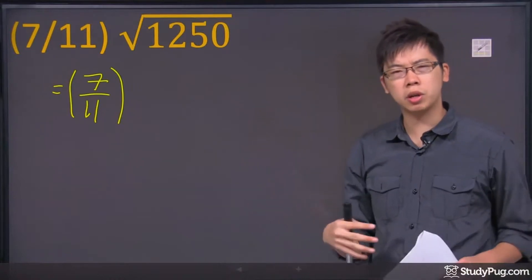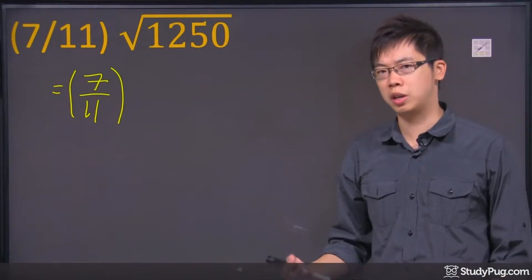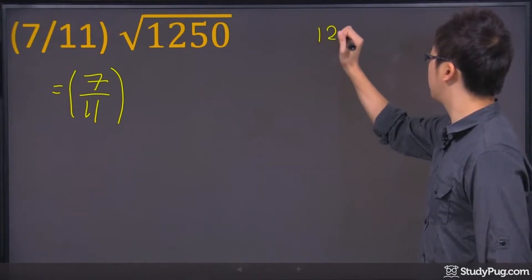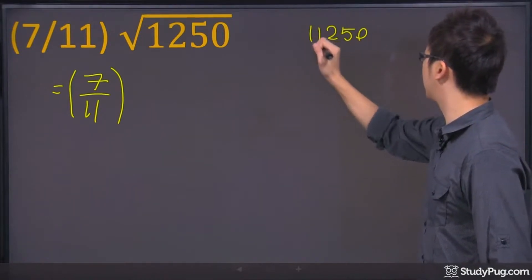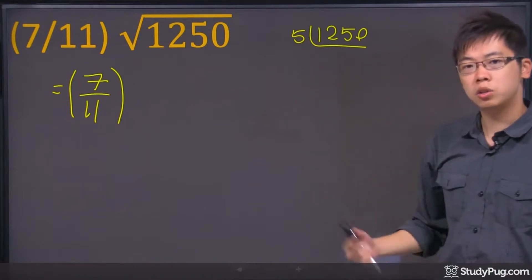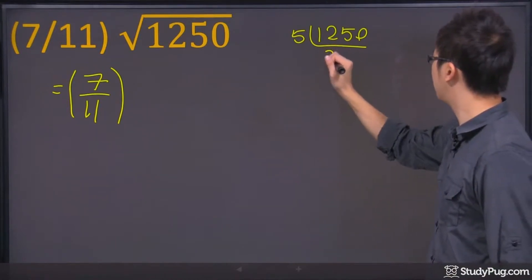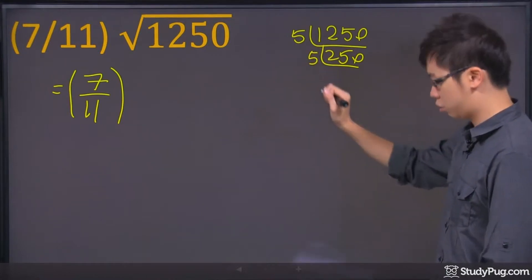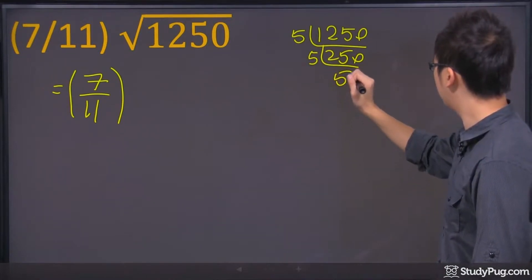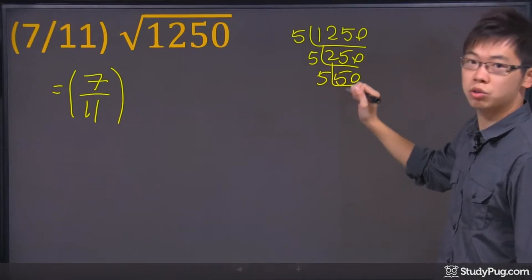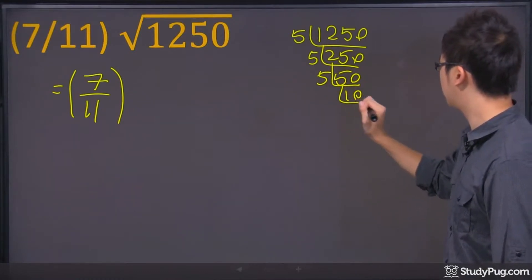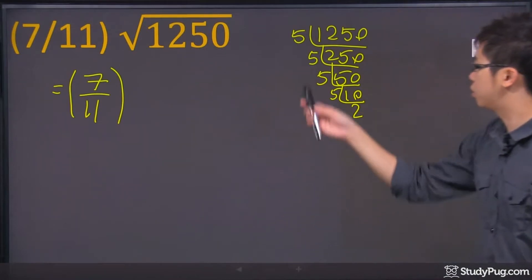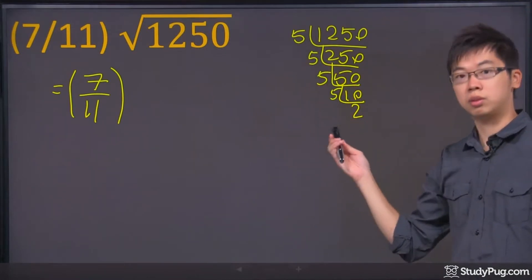For the 1250, because the number gets too big, what I would suggest is to figure out the prime factorization. So let's do 1250 on the side. If you divide the number by 5, you get 250. Divide by 5 again, you get 50. Divide by 5, you get 10. Divide by 5 again, you get 2. So 1250 is just 5 × 5 × 5 × 5 × 2.